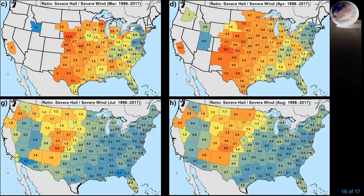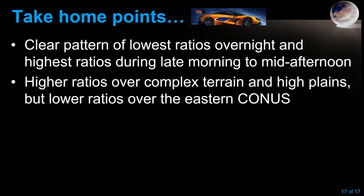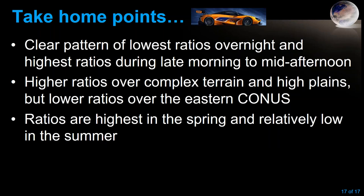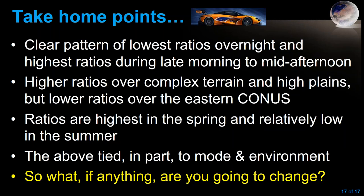So what are the key takeaways? First, there is a very clear pattern of the lowest ratios occurring overnight and the highest ratios during the late morning to mid-afternoon — this should factor into how you include hail or wind tags at various times of day. Second, higher ratios are clear over complex terrain and the High Plains, with lower ratios over the eastern U.S. Finally, ratios are highest in spring and relatively low in summer. All of these are tied in part to convective mode and the environment, but also to population, mesonets, land use, and land cover. What, if anything, are you going to change about your WarnGen defaults — and it depends whether you're in Colorado versus Kentucky.